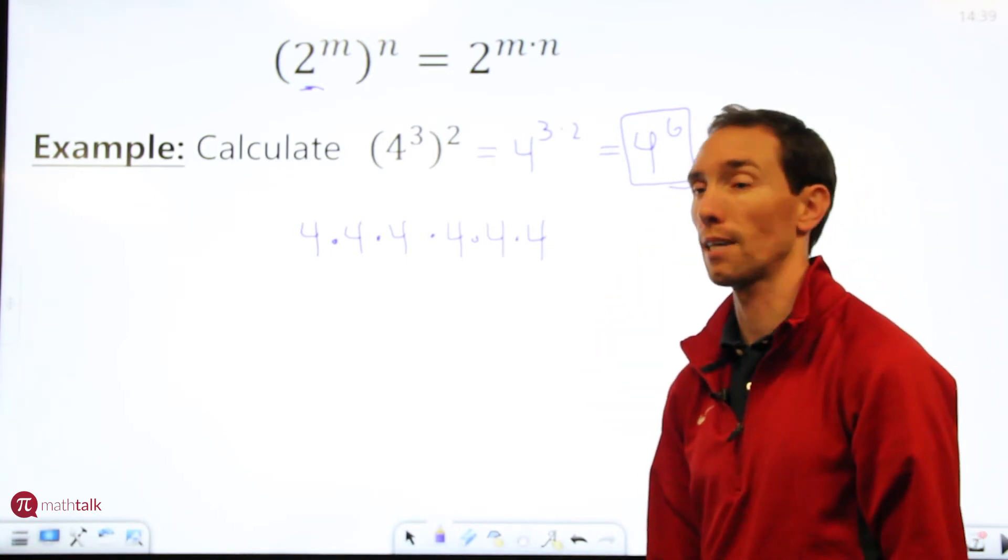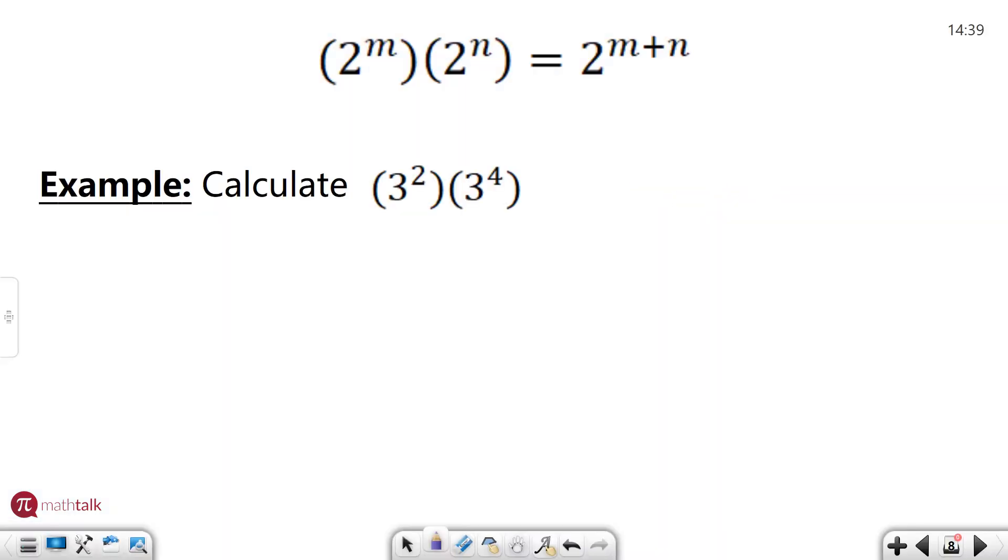Let's look at a couple other examples. There's another rule that says if you have a base number raised to a power of an exponent and you multiply that same base to a different power, all you have to do is add the exponents together and keep the base. So let's look at this example.